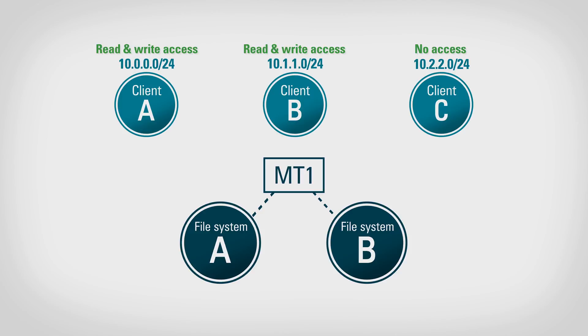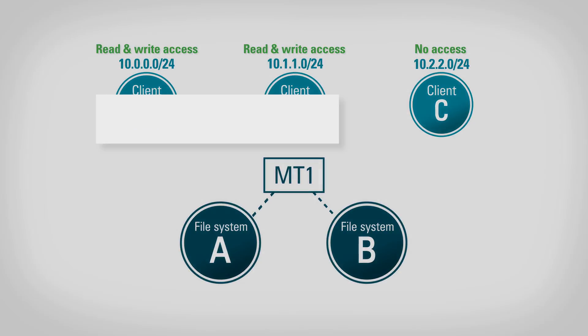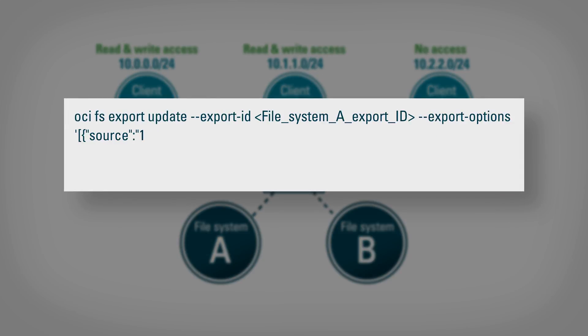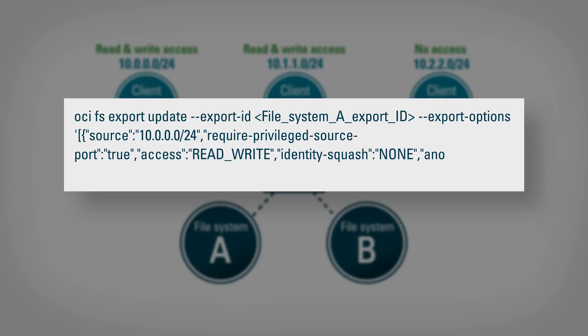Since clients are connecting to the mount target from different CIDR blocks, you can set the client options for both file system exports to only allow access to a single CIDR block. Set file system A to allow read-write access only to client A, who is assigned to CIDR block 10.0.0.0/24. Since neither client B nor client C is included in this CIDR block, they cannot access file system A.